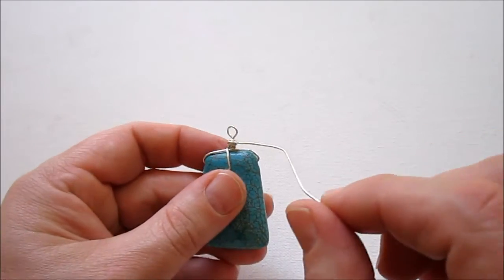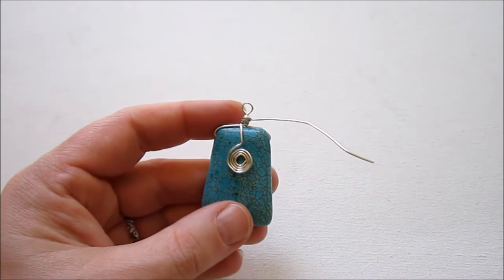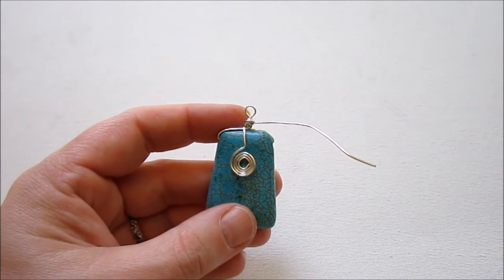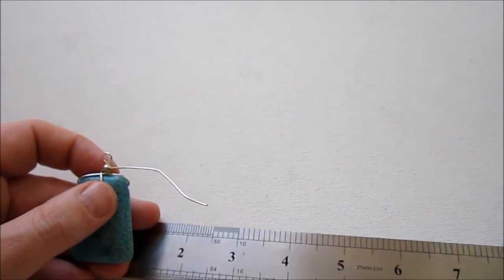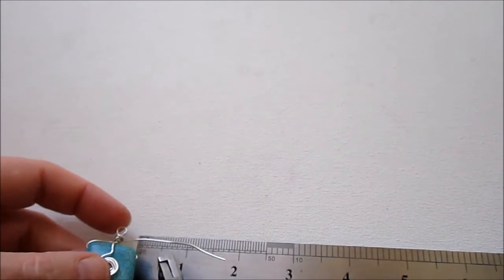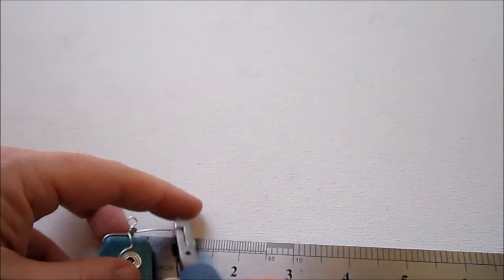And so now we're going to deal with this other end. You could just trim it off and be done with your pendant. But I'm actually going to make another spiral. Just a tiny one. So I'm going to cut this wire, and making a flush cut. So there's about a half of an inch left.